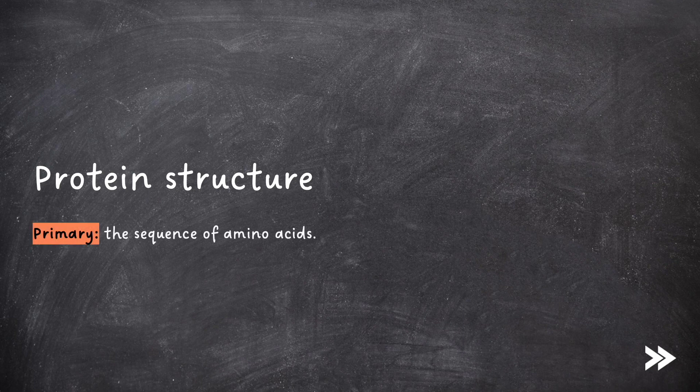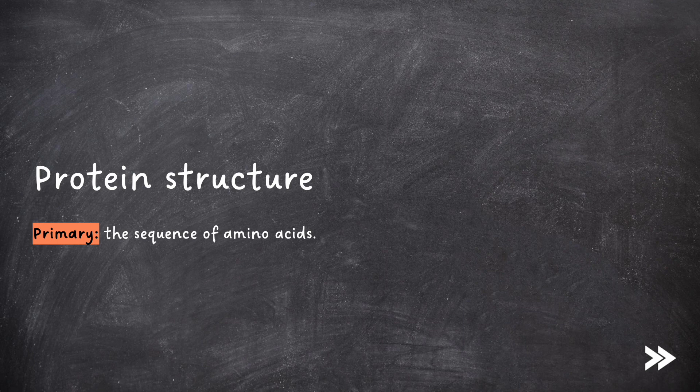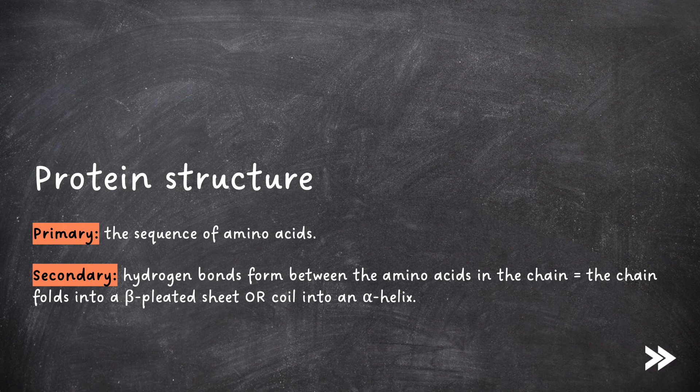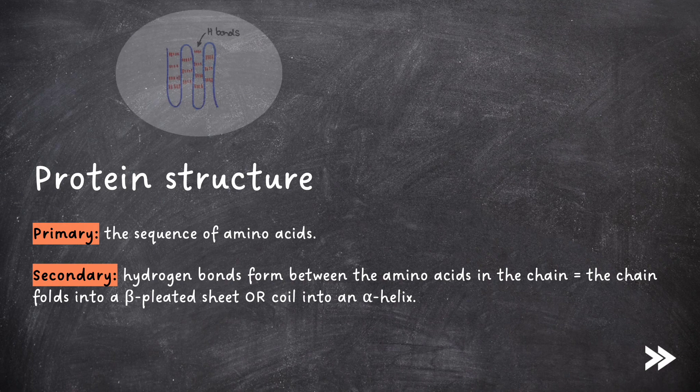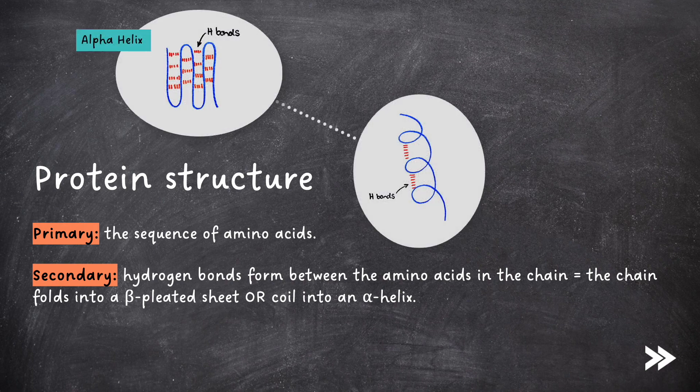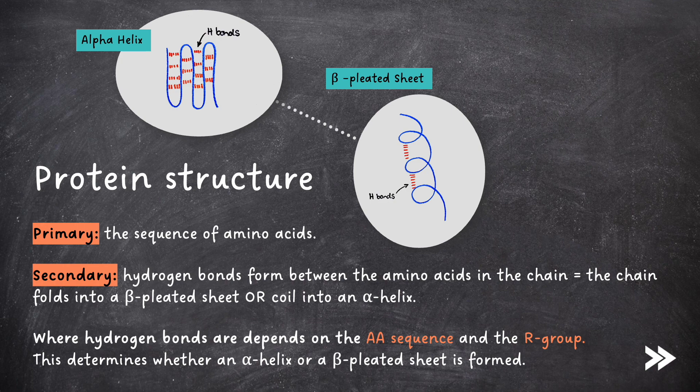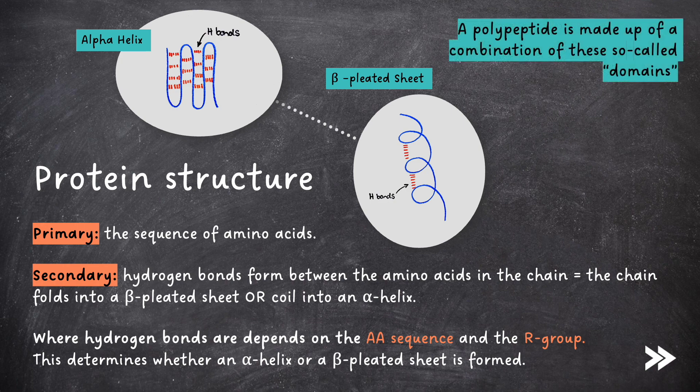The primary structure is the sequence of amino acids. The secondary structure is when hydrogen bonds form between the amino acids in the chain, causing the chain to fold either into a beta-pleated sheet or to coil into an alpha helix. Note that where hydrogen bonds form depends on the amino acid sequence and the R group.